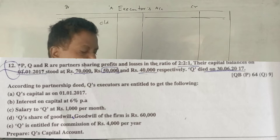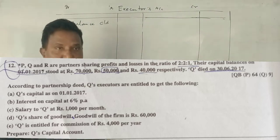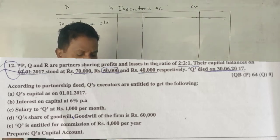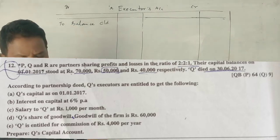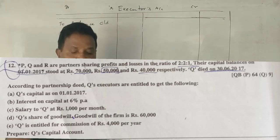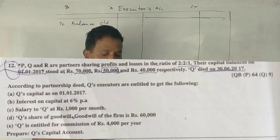X, Y, Z are partners sharing profits and losses in the ratio of 2:2:1. Their capital balances on 1st April 2017 stood at 90,000, 60,000, and 40,000 respectively. Mr. Y died on 1st January 2018.